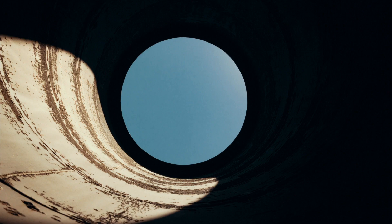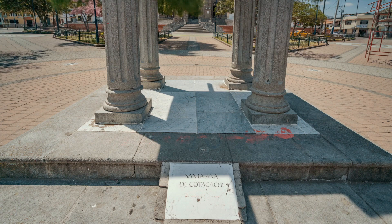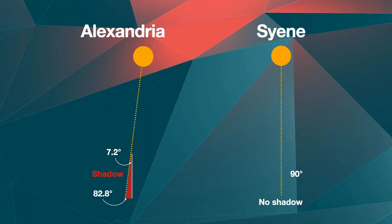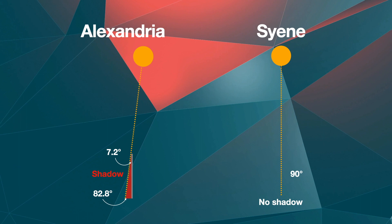In Alexandria on the summer solstice, however, Eratosthenes observed that objects did cast a shadow at noontime. Eratosthenes measured the angle of the shadows to be 7.2 degrees, meaning the sun was 82.8 degrees above the horizon and not 90 degrees like in Syene.